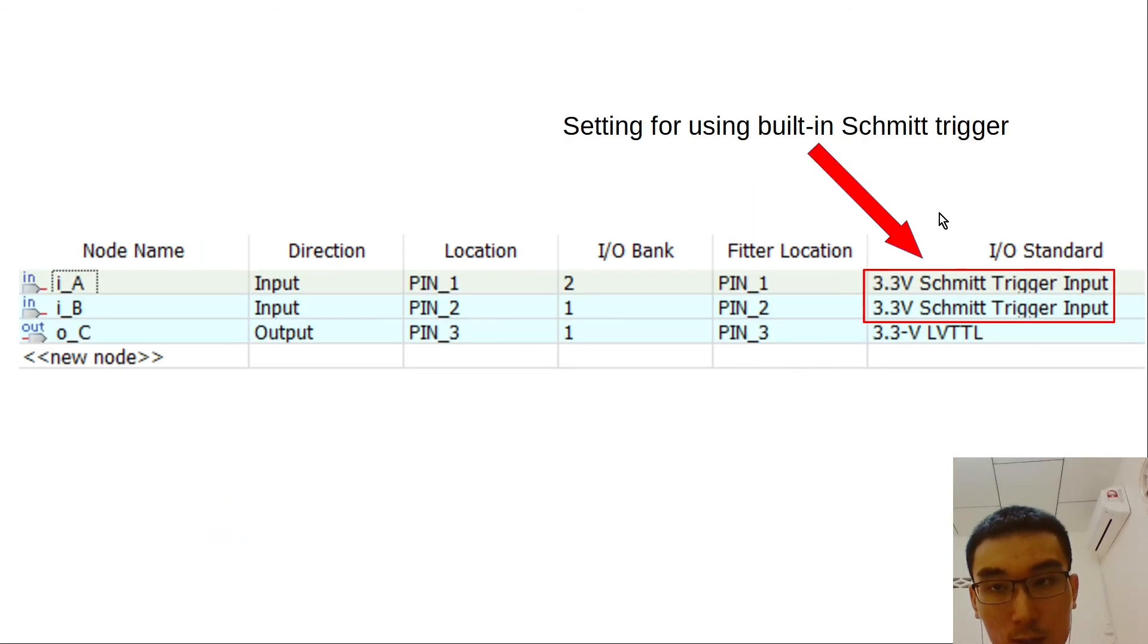So far I have mentioned the built-in Schmitt trigger but I haven't talked about where it comes from. Later on when you want to program the CPLD, in the pin assignment there is an option to set the built-in Schmitt trigger input like this.